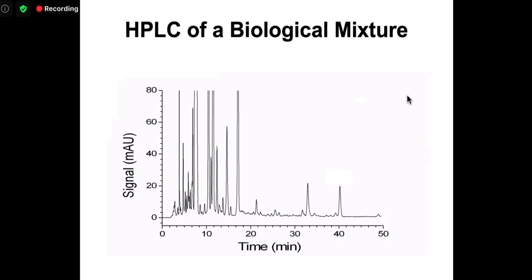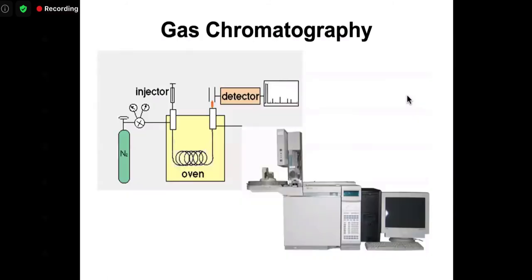A typical chromatogram shows a biological mixture of probably several hundred to several thousand components running on an HPLC column for about 50 minutes — a long separation. Many people in metabolomics like to get separations down to 10 or 12 minutes using UPLC. The peaks correspond to individual chemicals or, in some cases, dozens of chemicals under a peak. Separation helps simplify the mixture to either individual compounds or a small number that can then be analyzed by mass spec or NMR.